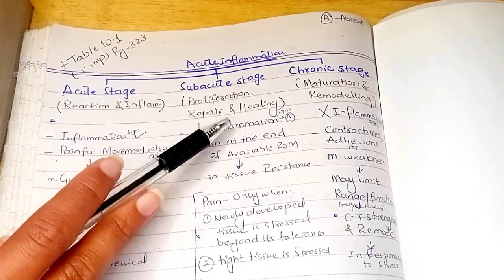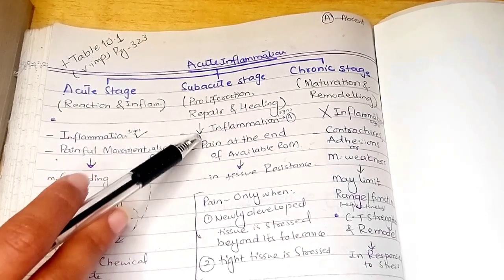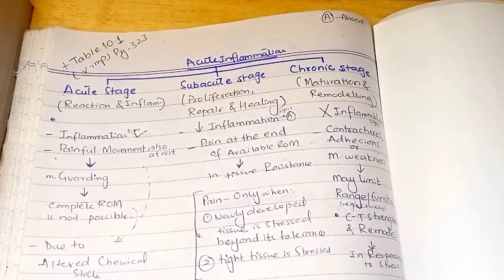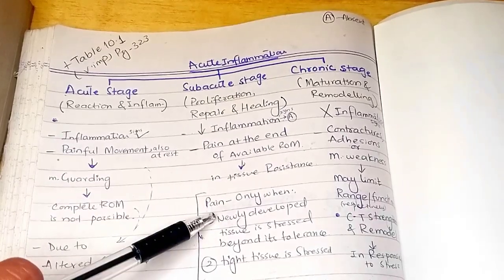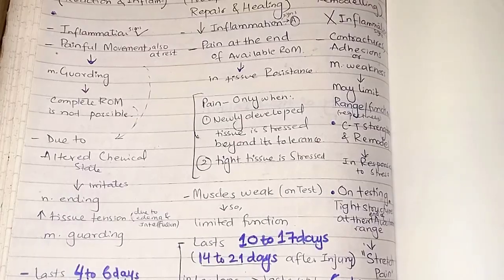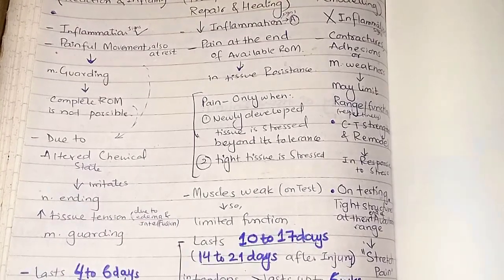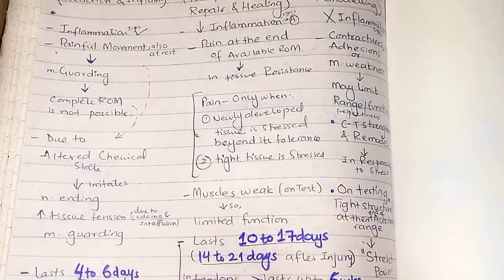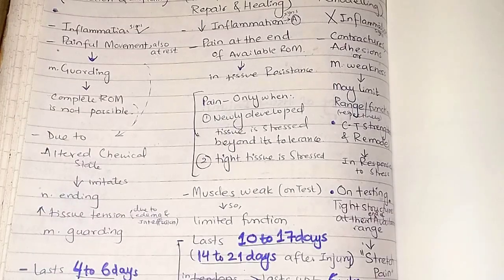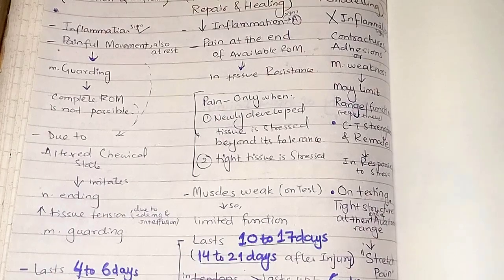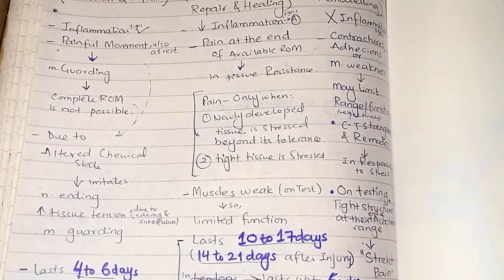From the notes on the subacute stage: inflammatory signs are very much less, and pain is observed at the end of the available range of motion — in the area of tissue resistance. Pain occurs when newly developed tissue is stretched beyond its tolerance. Because newly developed tissue is not as strong as uninjured tissue, you will experience pain. Pain can also be experienced when tight tissue is stressed, and that pain would also be in the region of tissue resistance.